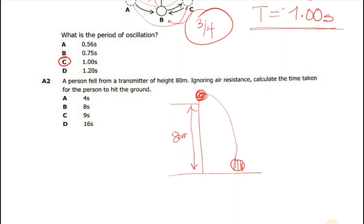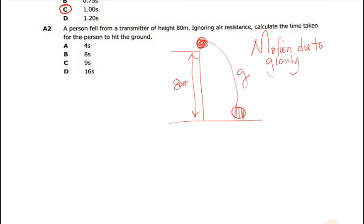You need to understand that this is motion due to gravity. Because the person is falling. So it's falling under the influence of gravity. So which equation of motion are we going to use? We are going to use the second equation of motion, which allows us to... Because here we only have distance. So our data here is that we've got distance, 80 meters. We are looking for time. Gravity, we know that it's 10.